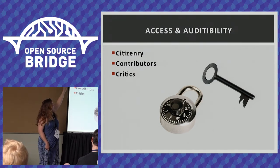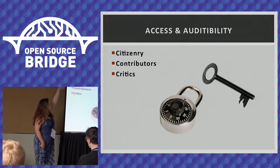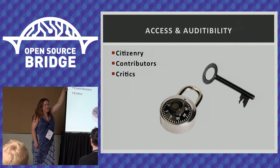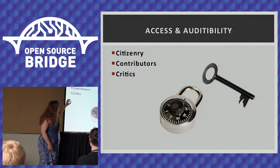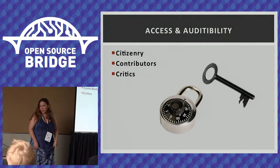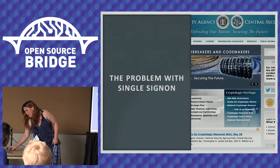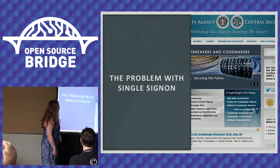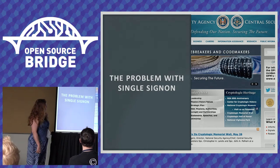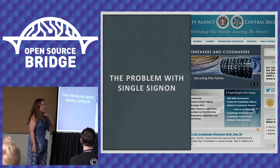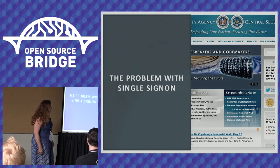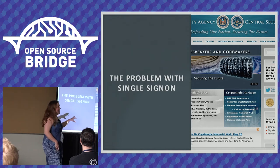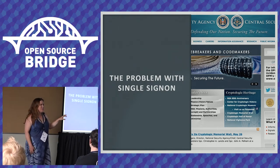The people that need these features are the citizenry themselves, contributors to the political system whether they're citizens or not, and critics in particular need a certain amount of protection. The problem with single sign-on is — my screenshot from the NSA — if you're not paying for a service, you're selling yourself, you're selling your data for free services. Beyond that, it's never really clear to me which permissions they're actually using in most frameworks when you download a mobile app.